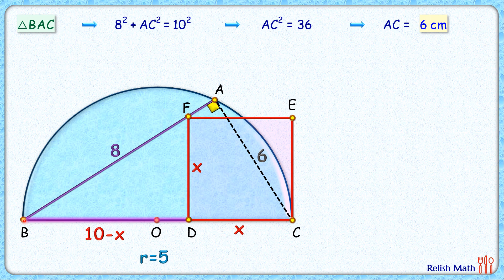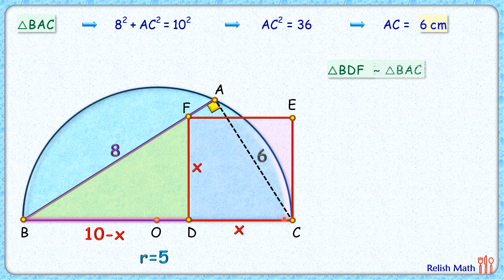Now if you look carefully, this triangle BDF, that's this yellow triangle, and the full triangle BAC, the big triangle, they are similar to each other. Why? Because angle B is common in both of them, and this angle D here is 90 and angle A is 90. So by angle-angle similarity we can say both the triangles are similar to each other.